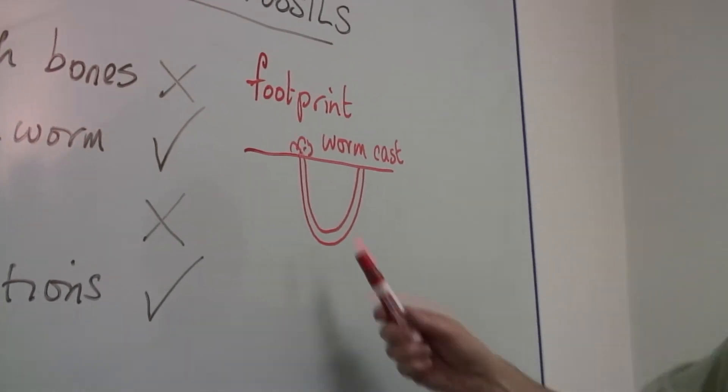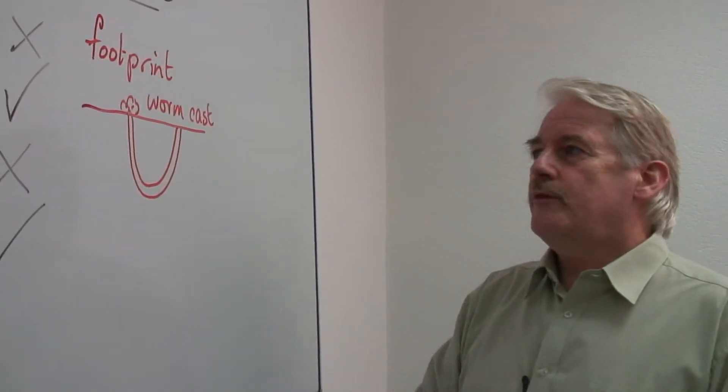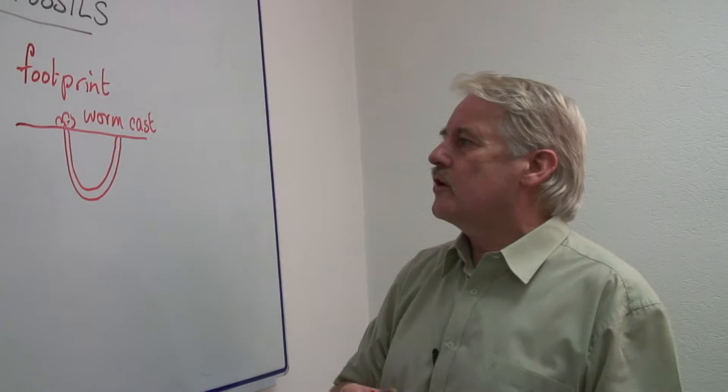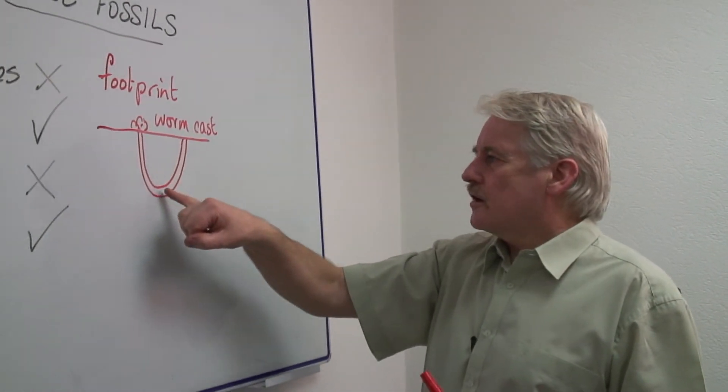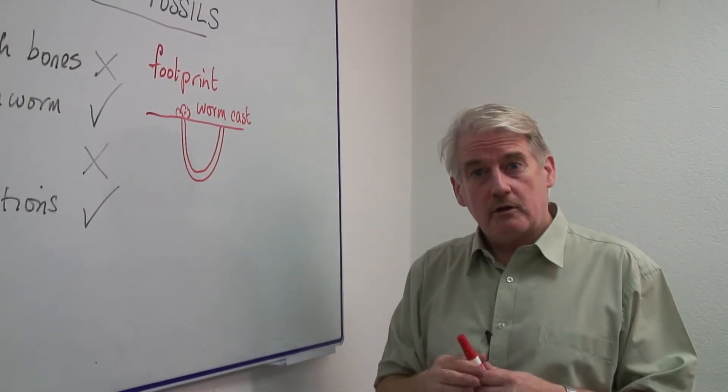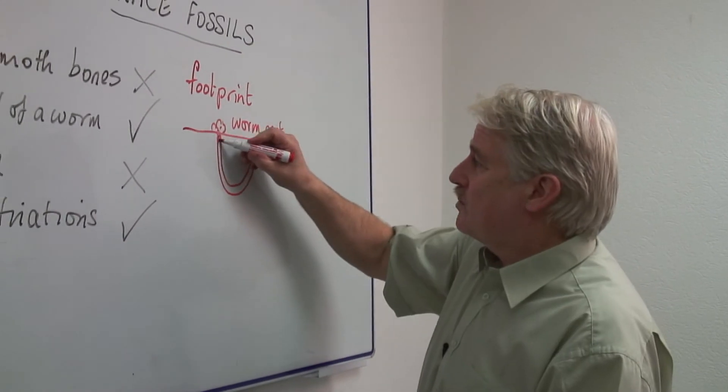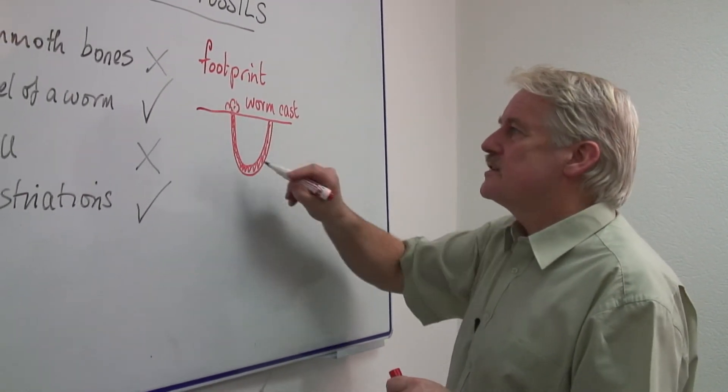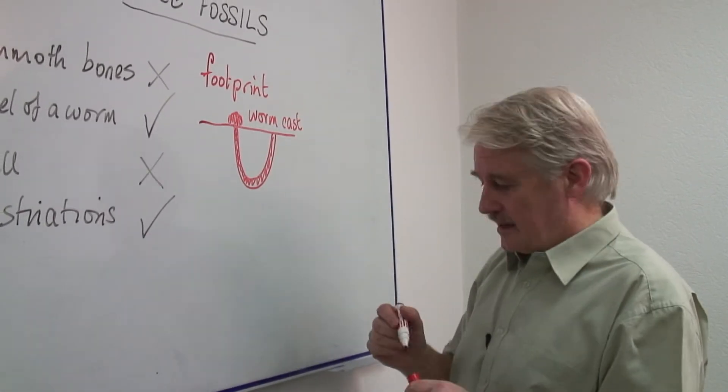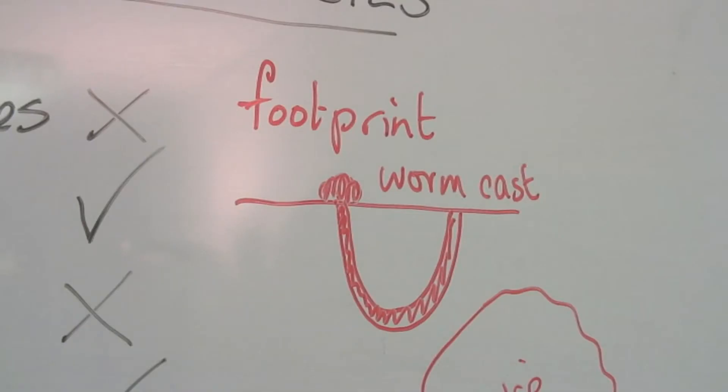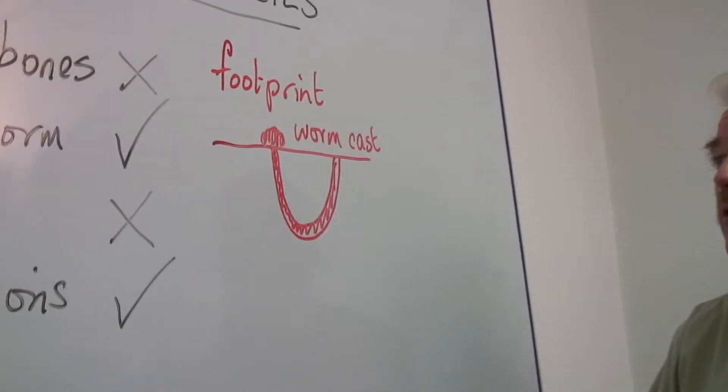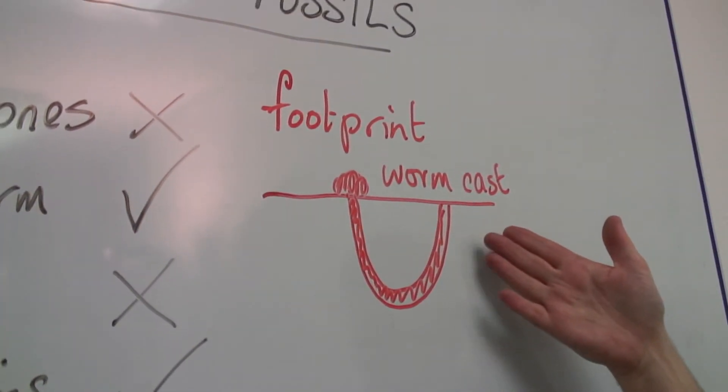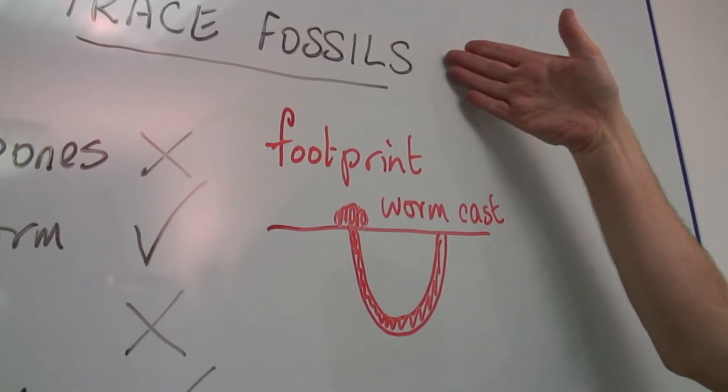We know that the worm burrows down. So if we find in a rock the remains of a worm tunnel—and what it will look like is probably dark material inside of light material and this material at the end—if we find something like that, it tells us which way up this rock is. And that is very important. That is a worm cast. This is a trace fossil.